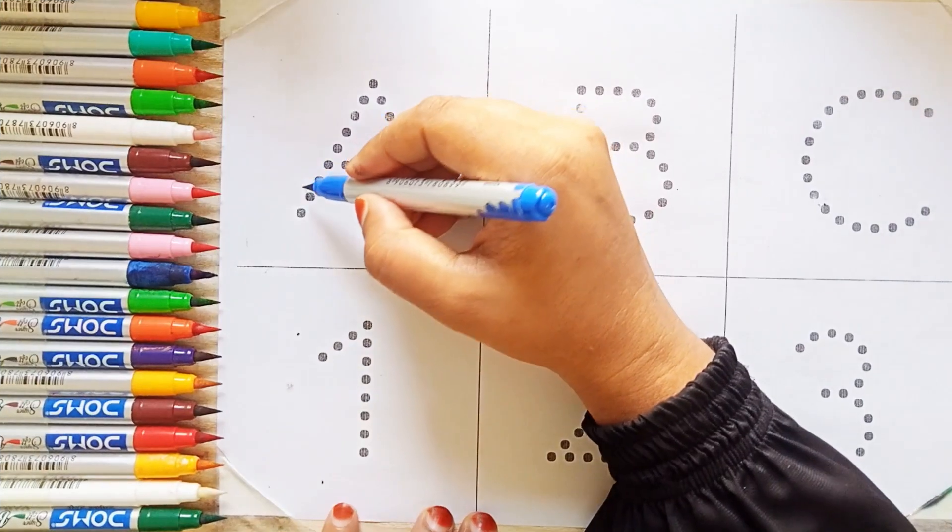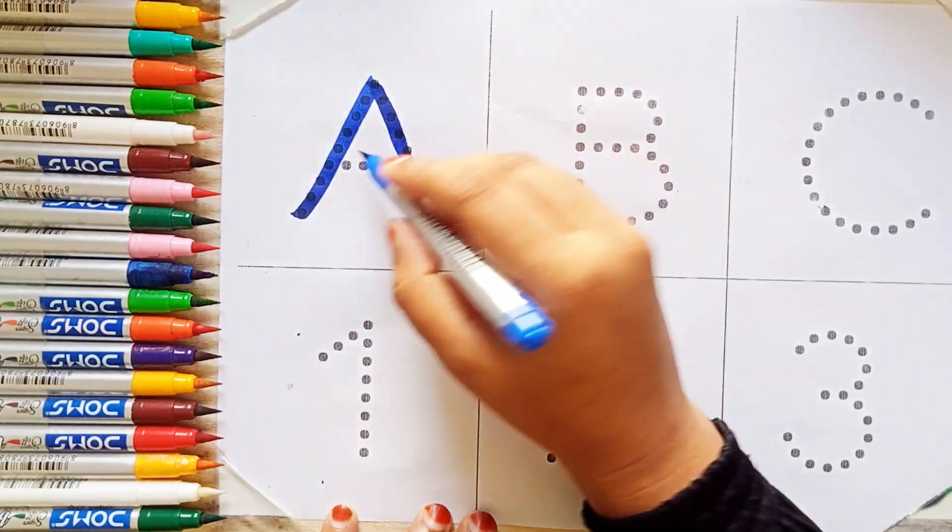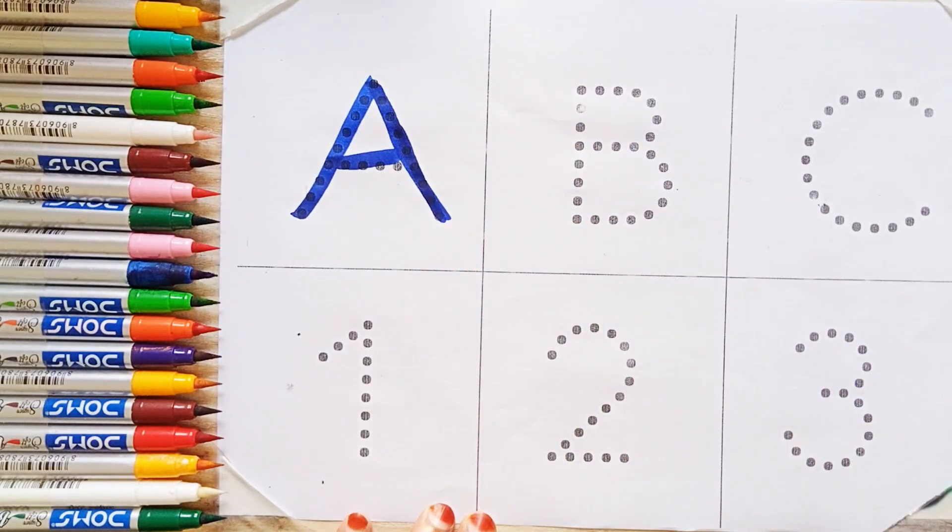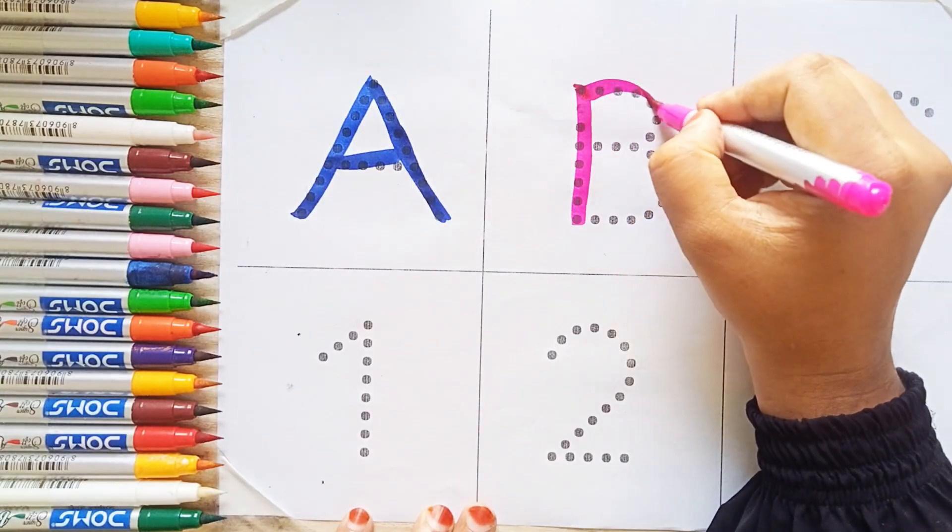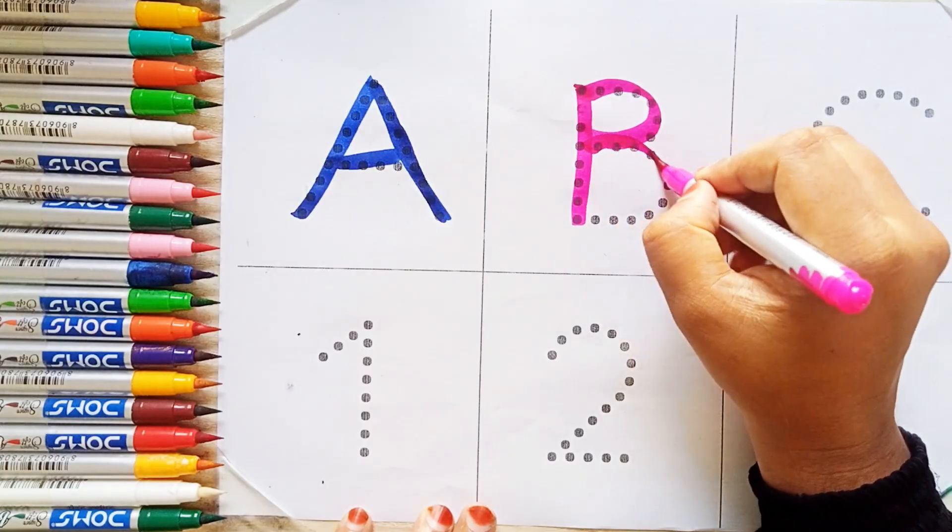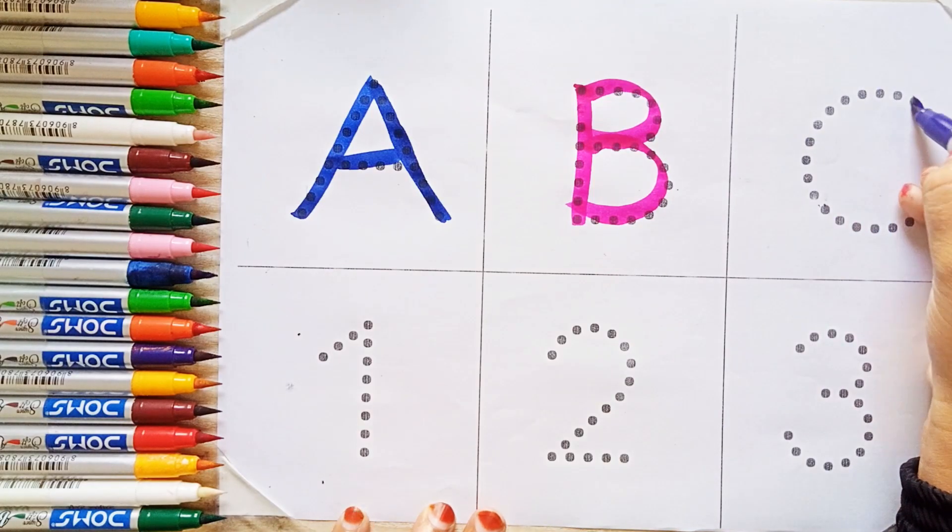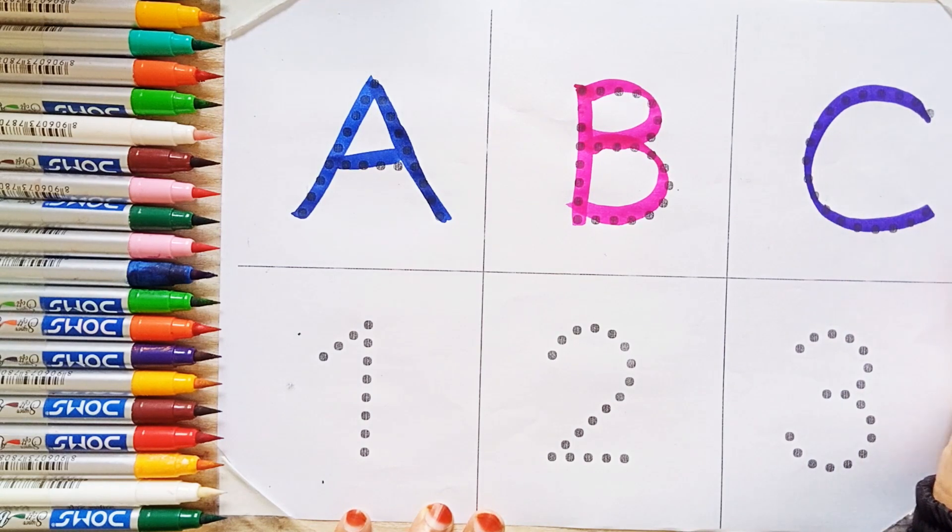Blue color is A for airplane. Pink color, B for butterfly. Violet color, C for coconut.